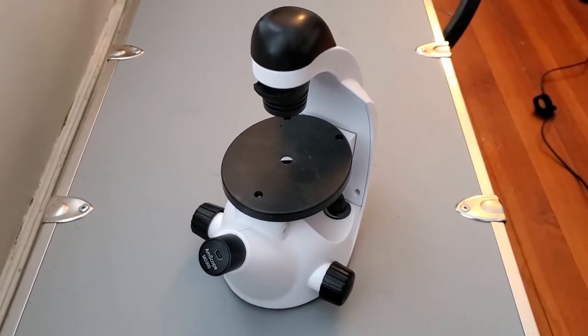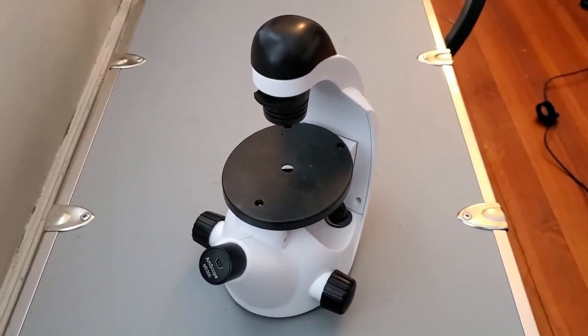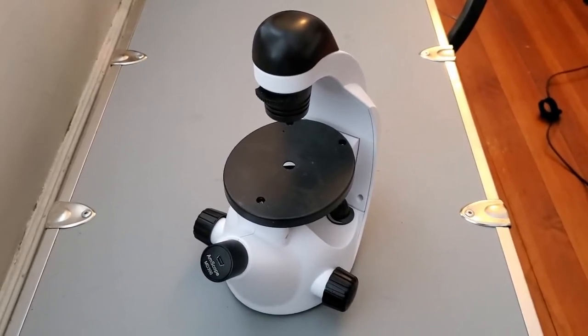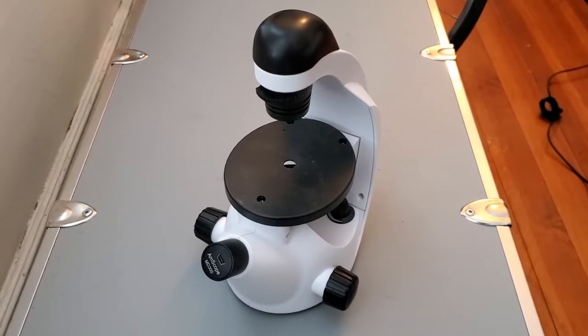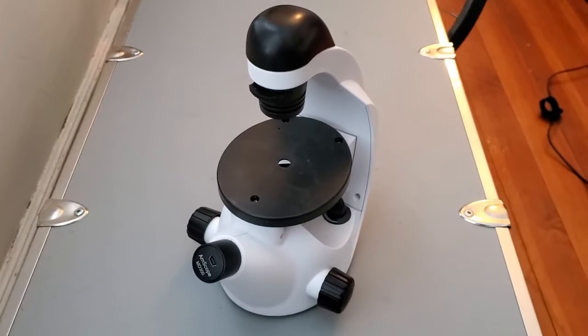This is probably the most basic model that you can get off of Amazon. It's probably about fifty dollars for the actual microscope part and then another fifty or so for the USB camera. I'm just going over the basic operations here.